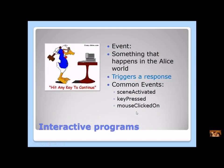In Alice, to make something interactive is called an event — that's the interaction that happens in Alice. An event is something that happens, and we say that it triggers a response. Just like when you push the button on your remote and the channel changes — pushing the button is the event, and changing the channel is the response. When I push a button on the vending machine, that's the event, and the food that comes out is the response.